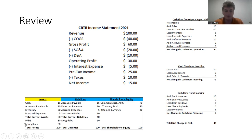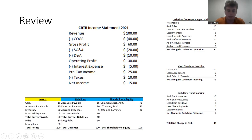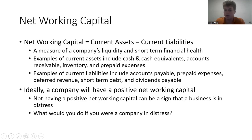Net working capital is a business's current assets minus current liabilities, and it's a measure of a company's liquidity and short-term financial health. Examples of current assets include cash and cash equivalents, accounts receivable, inventory, and prepaid expenses — assets that can be liquidated into cash in less than a year. Current liabilities are things owed to external third parties in less than a year, including accounts payable, prepaid expenses, deferred revenue, short-term debt, and dividends payable.